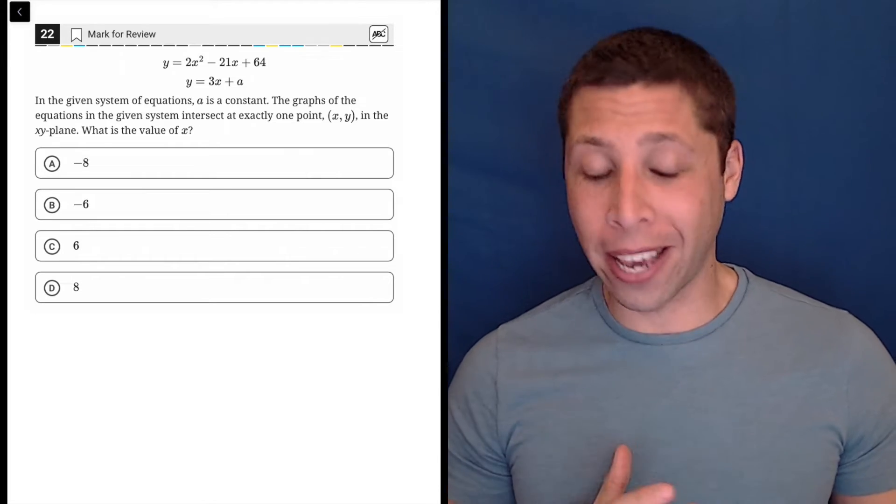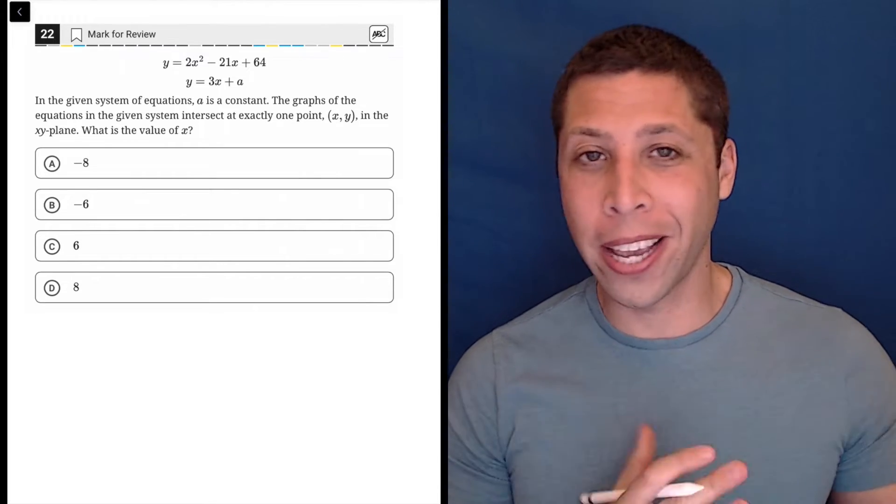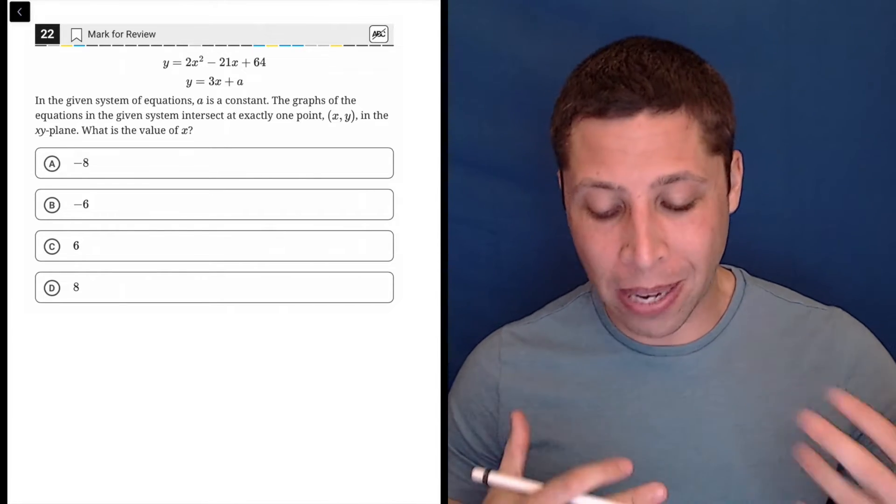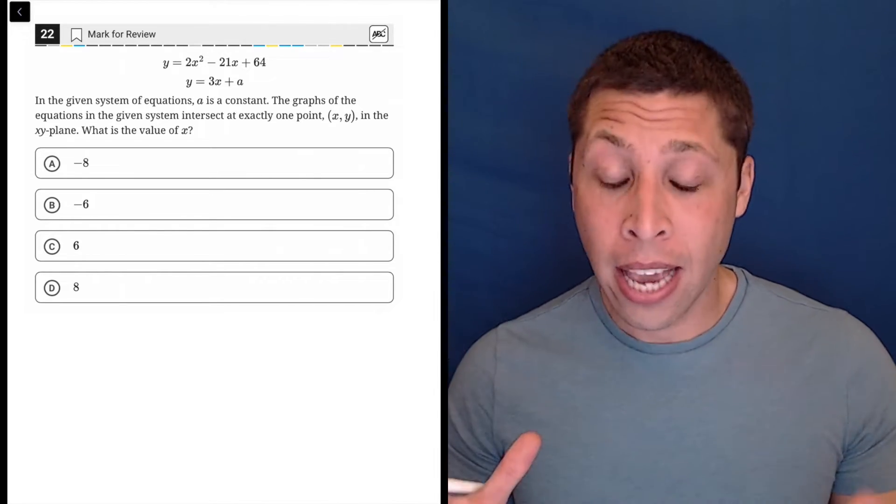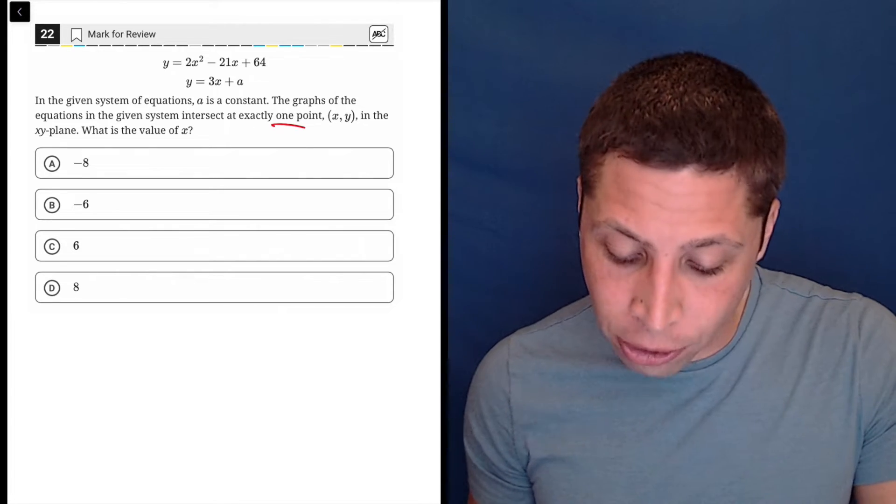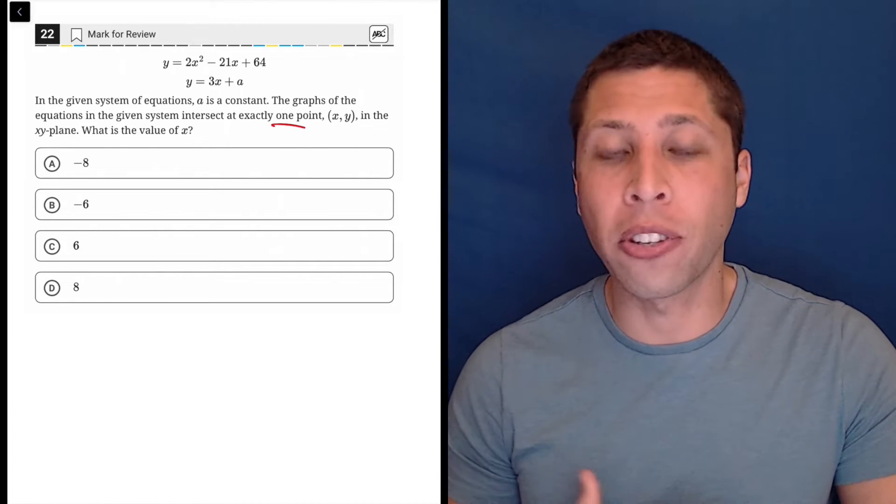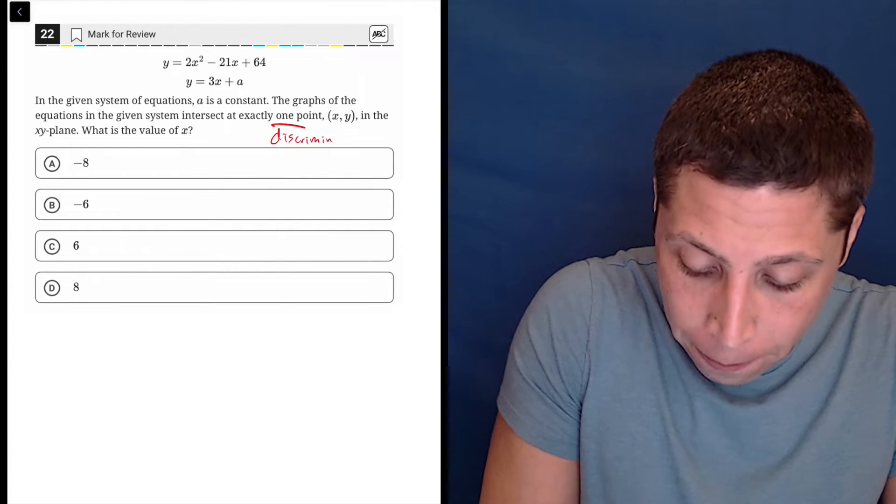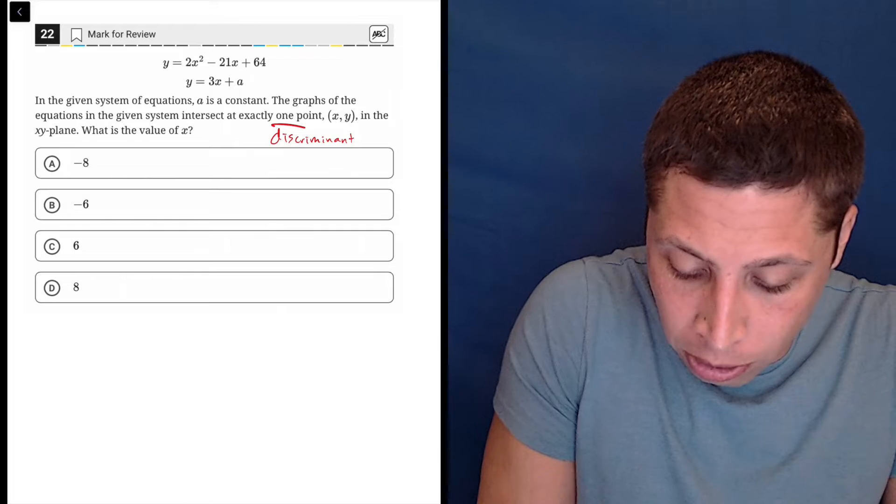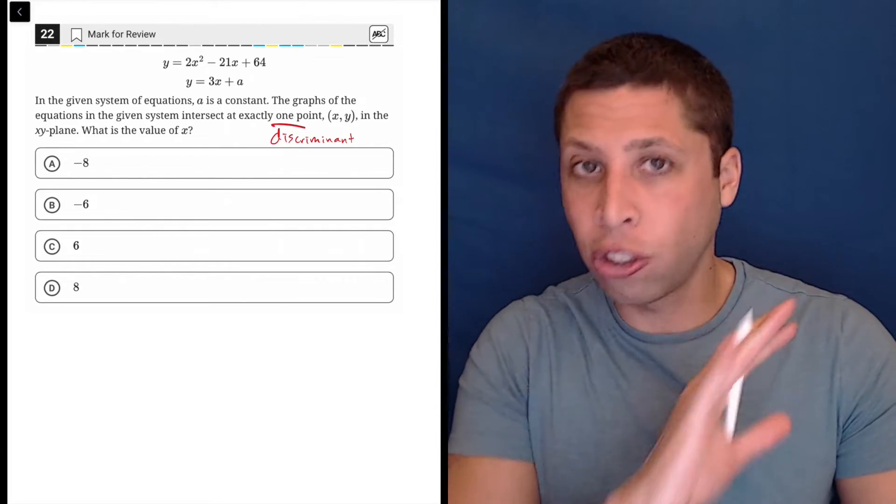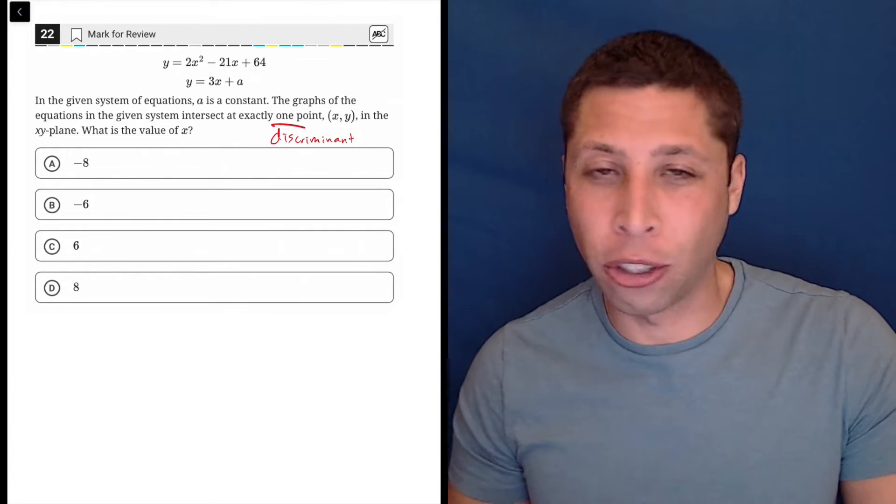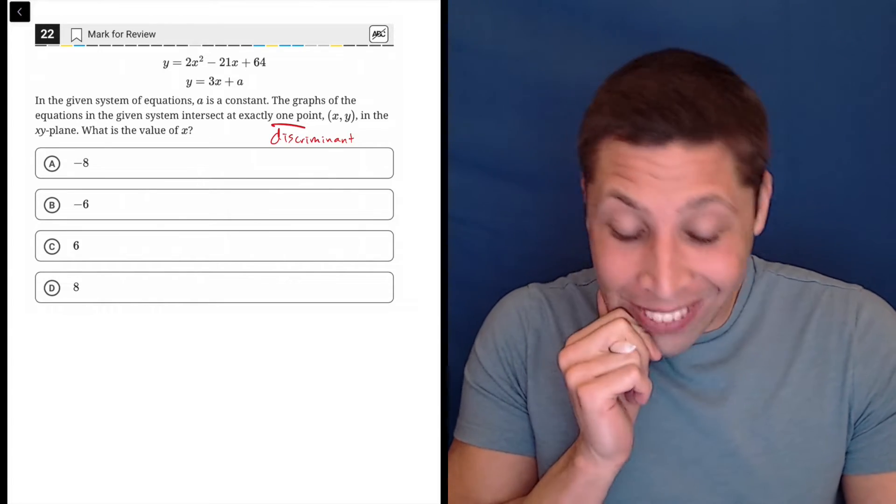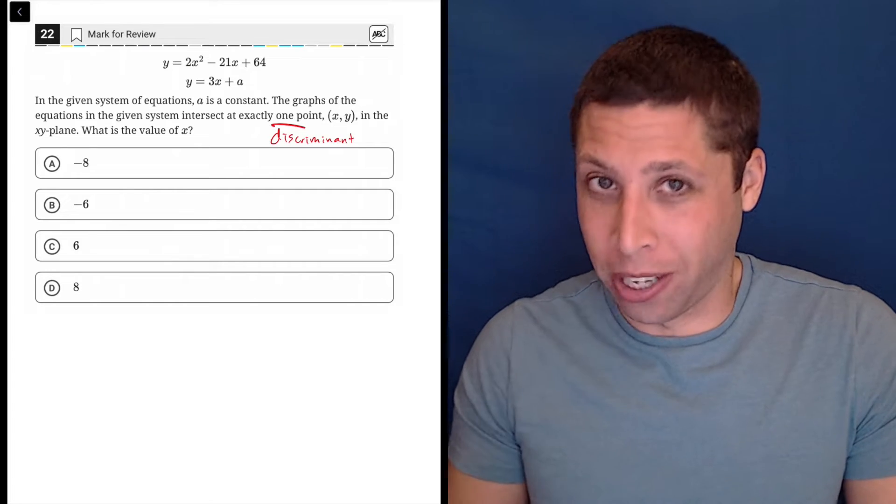All right, this question is going to be complicated if we do it by the book, if we go by the way that the College Board wants to do it. It's going to involve some intense algebra. Basically any time we have a quadratic and we're being asked with a number of solutions, they intersect at exactly one point, we're going to have to use this concept called the discriminant to do that. We can do that and I'll show you that method because I don't know if the way I'm going to show you actually works all the time, but I really wouldn't want to do this and there might be a shortcut.